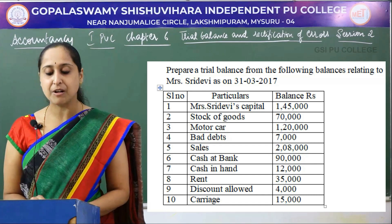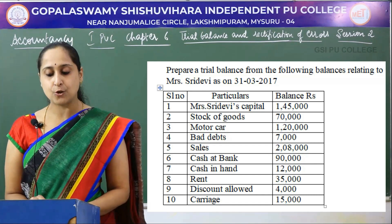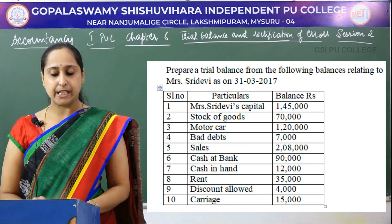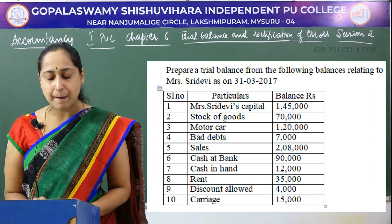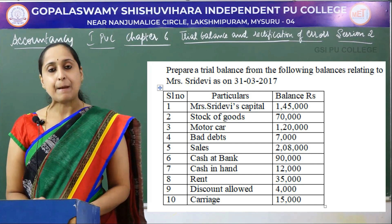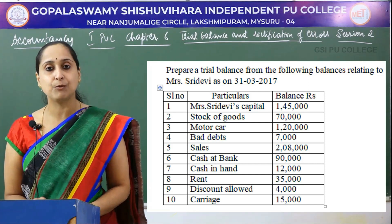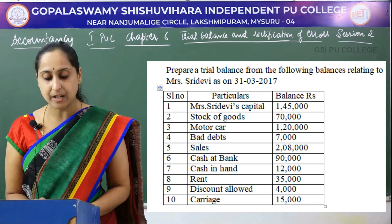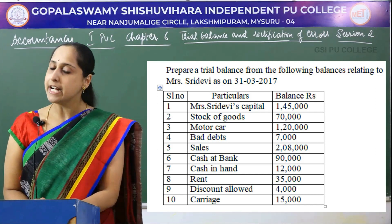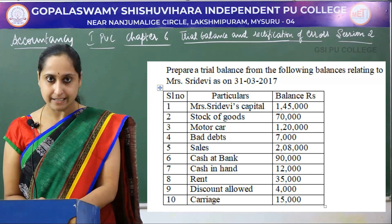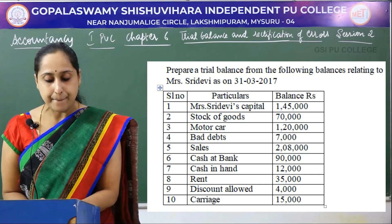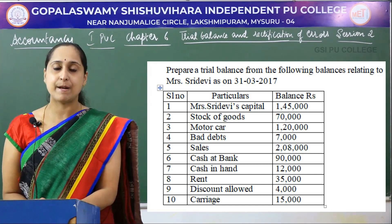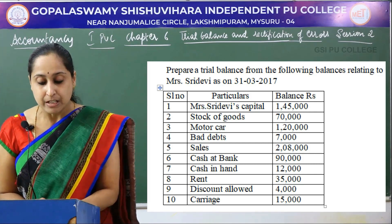Prepare a trial balance from the following balances relating to Mrs. Shridevi as on 31st March 2017. Here they have given the particulars. First is Mrs. Shridevi's capital — it is 1,45,000. Capital always shows credit balance, so we have to enter this on the credit side. Second is stock of goods — this is 70,000. Stock is an asset, so we have to record it in the debit side. Motor car is again an asset, we have to record it in the debit column. Bad debt is a loss.